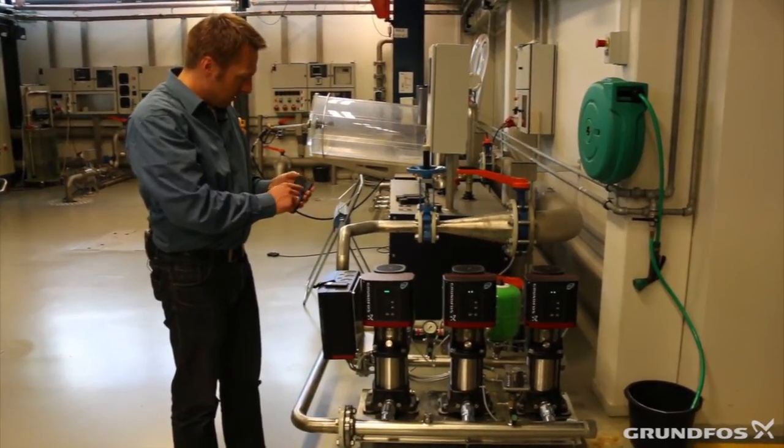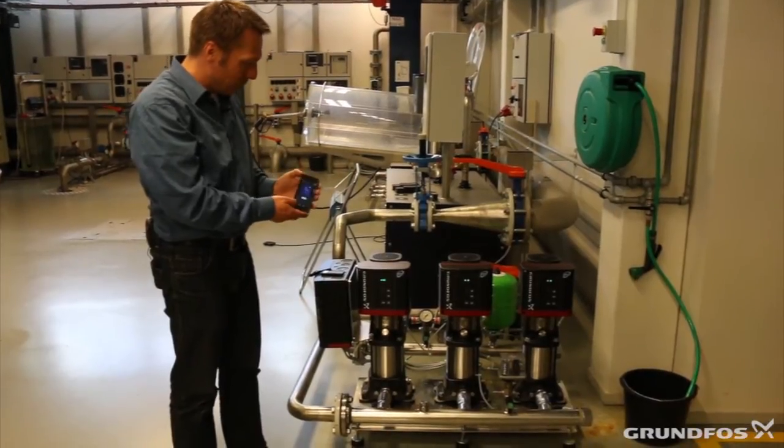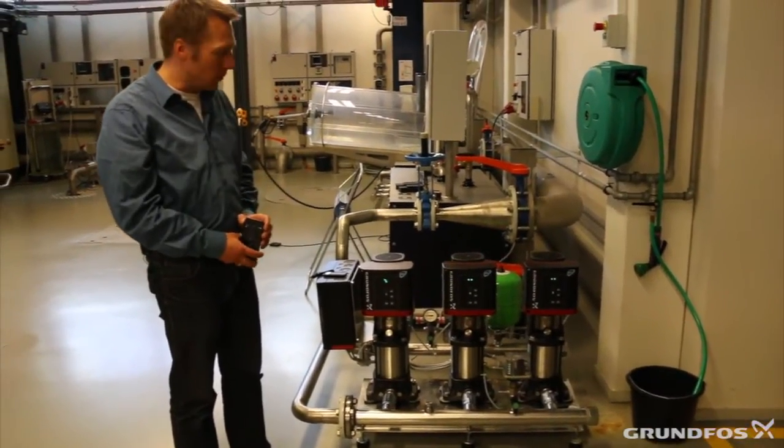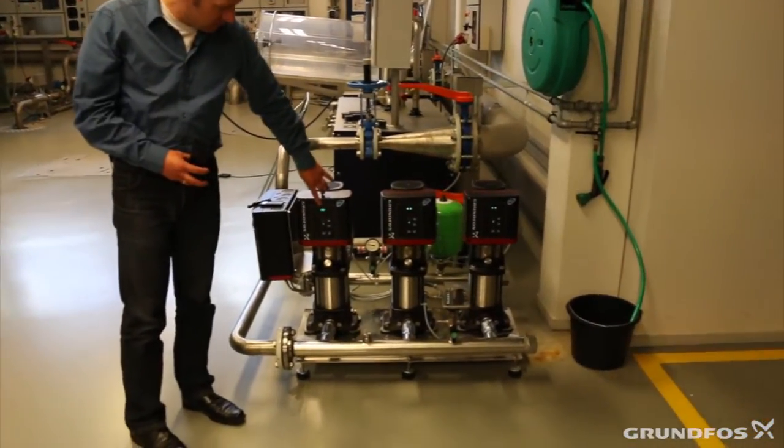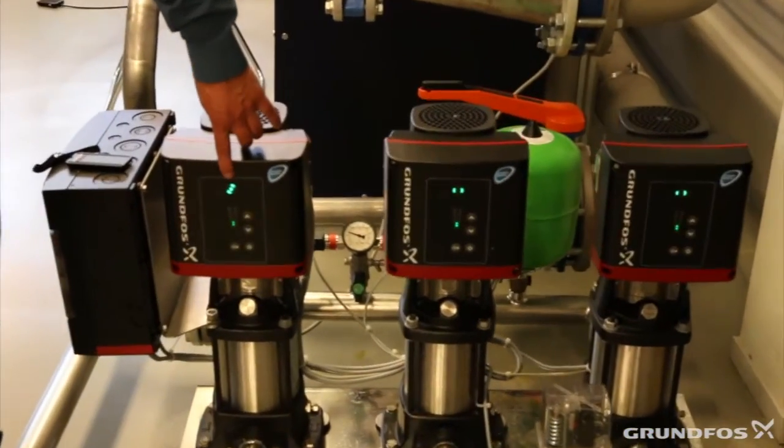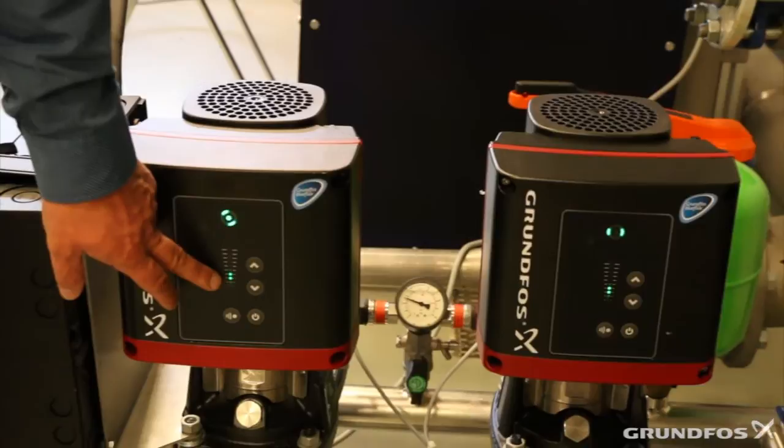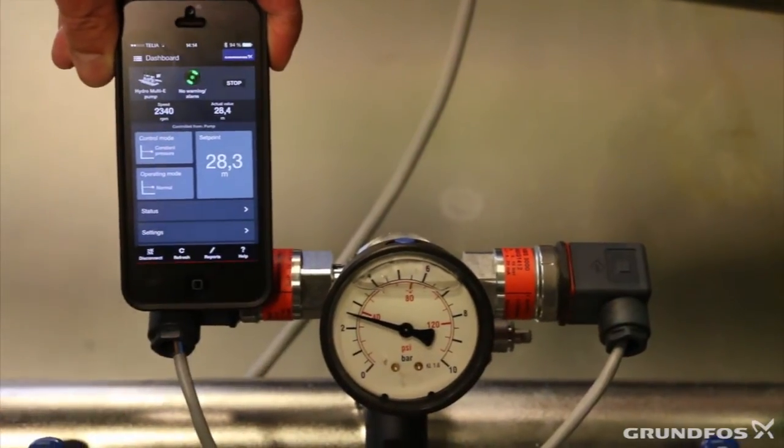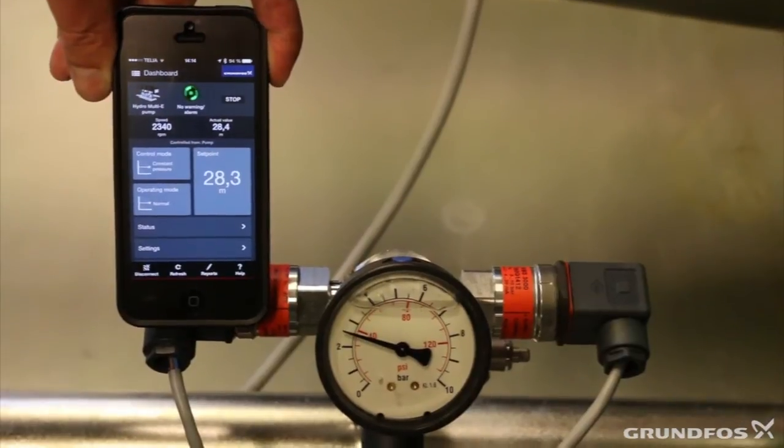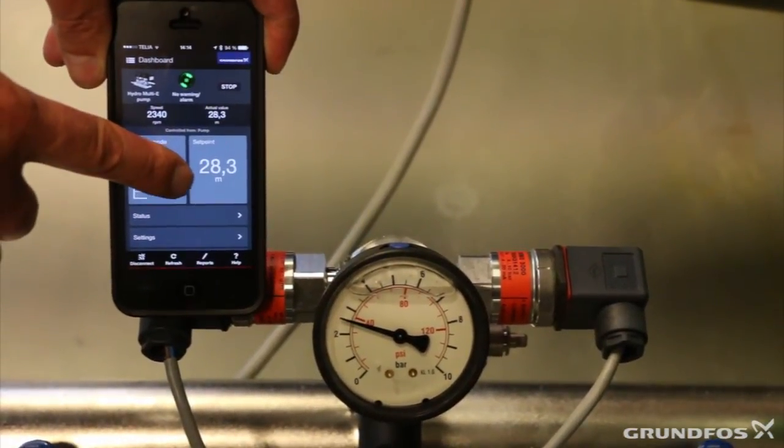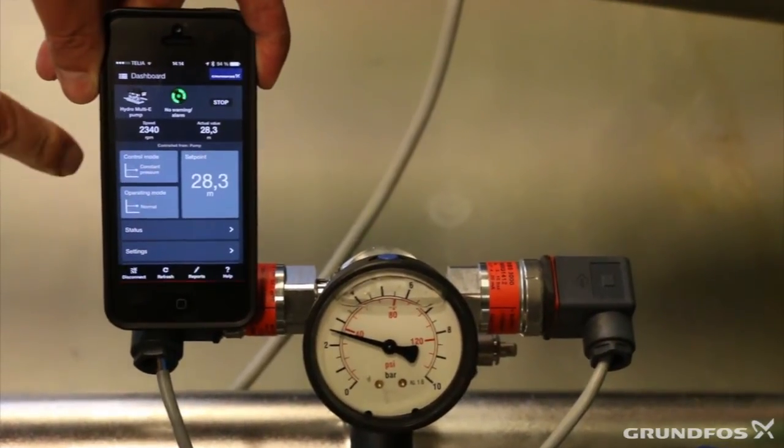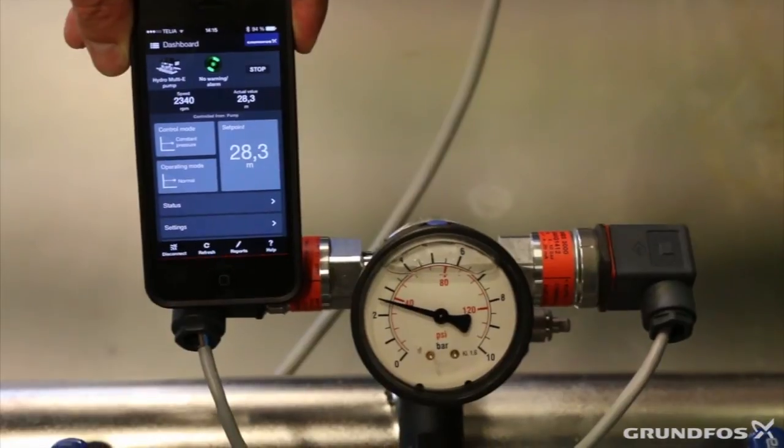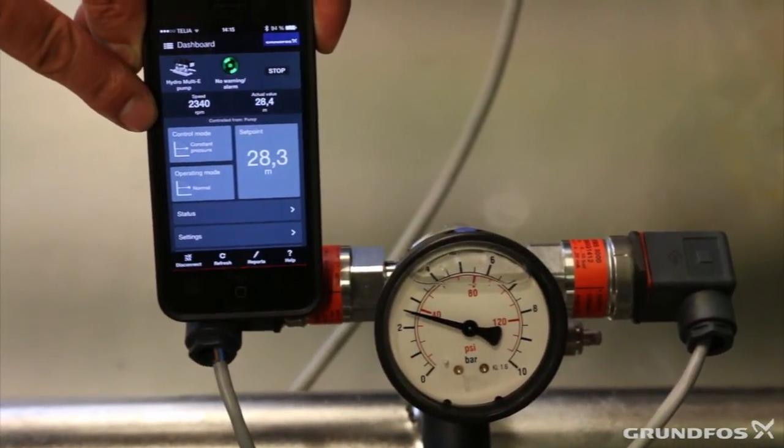We can now see the green lights of the pumps - this one pump is turning and we see that the pump is running at a given speed. If we now take a look at this pressure gauge and also take a look at the software, at the Grundfos Go, we can see that the set point is set to 28.3 meters of head and the actual value can be seen up here is also 28.3 meters of head. The speed which the one pump is running at is 2340 rpm.